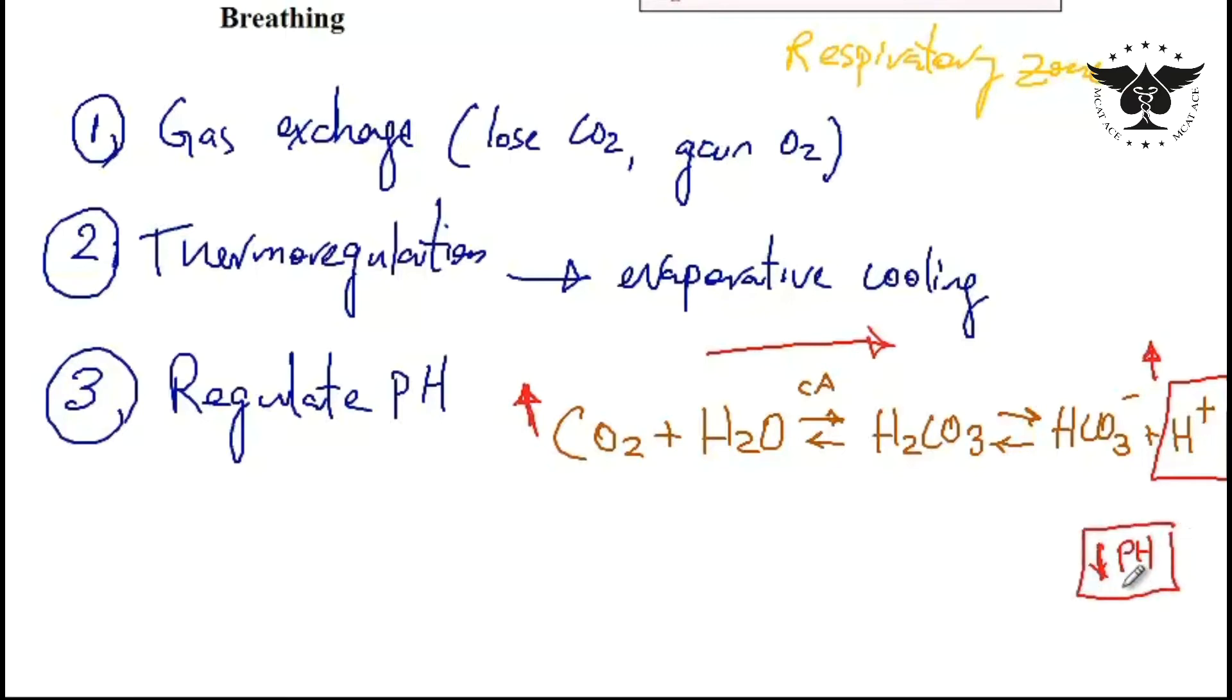Once this happens there is a respiratory regulatory center in our brain located in the medulla. I would like you to remember that the medulla is the center for regulating respiratory rate. Once medulla senses decrease in pH it would signal the respiratory system to increase the respiration rate as well as the respiration depth.